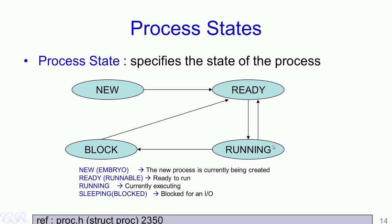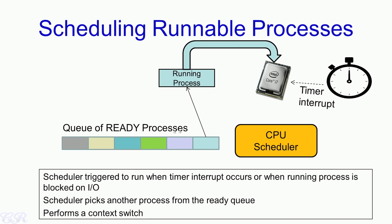At the end, when the process exits or gets terminated, it goes to what is known as the exit state, which is not shown in this diagram. You could look up the xv6 code proc.h for more information about the various states. Operating systems maintain a queue of processes which are all in the ready state. When an event such as a timer interrupt occurs, a module within the operating system known as the CPU scheduler gets triggered. This CPU scheduler then scans through the queue of ready processes and selects one which then gets executed on the processor. The selected process changes its state from ready to running and continues to run until the next timer interrupt occurs and the entire cycle repeats itself.